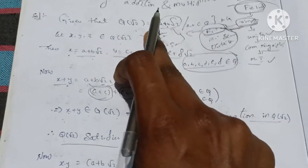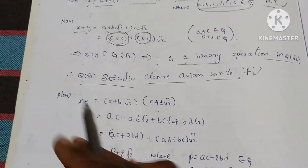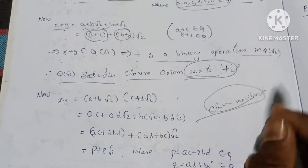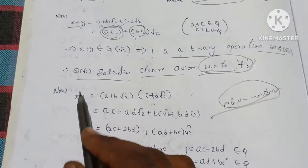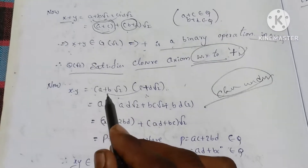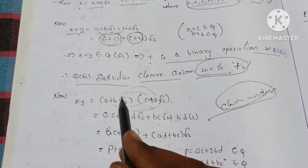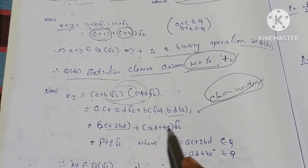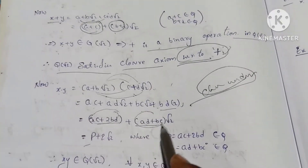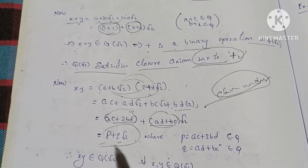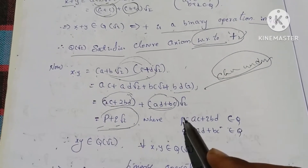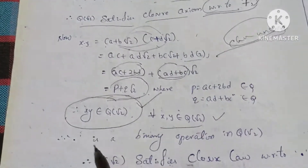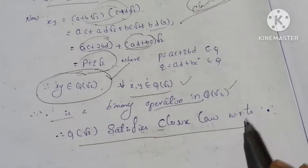Now closure under multiplication. x into y equals (a plus b root 2) into (c plus d root 2). Expanding: ac plus ad root 2 plus bc root 2 plus bd root 2 into root 2. Therefore x times y belongs to Q(√2), so dot is a binary operation in Q(√2). Q(√2) satisfies the closure law with respect to multiplication.